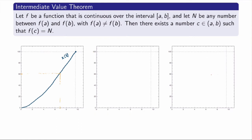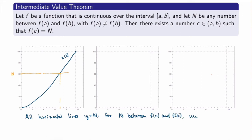There's another way of understanding the statement of the Intermediate Value Theorem, which is in terms of the graph of the function. If you pick your N and draw a horizontal line y equals N, and there exists a c between a and b such that the function takes the value N, that means this horizontal line must intersect the graph of the function. So another way of stating the theorem is that all horizontal lines y equals N, for N between f of a and f of b, must intersect the graph of the function — at least once — if the function is continuous.